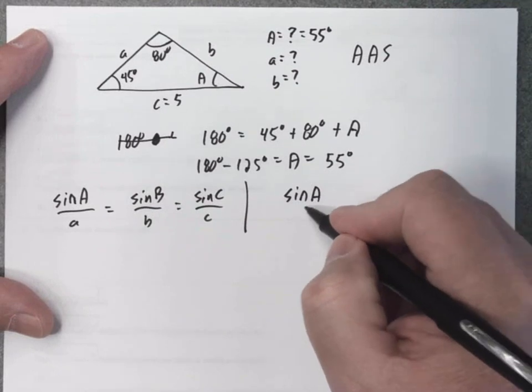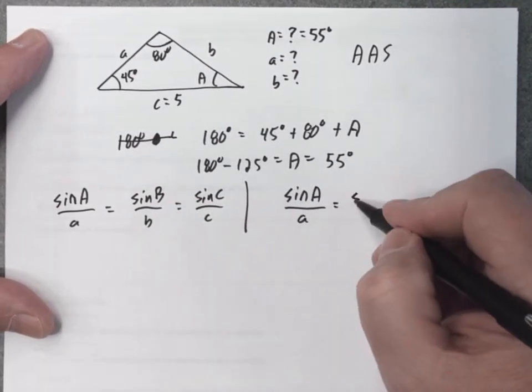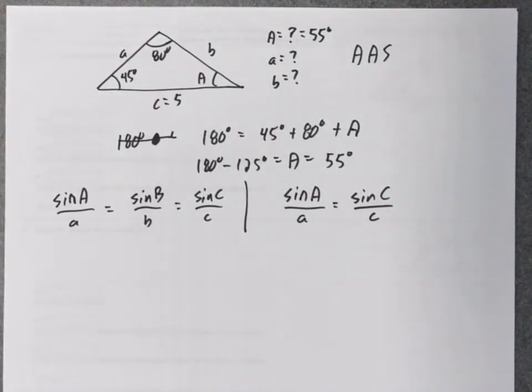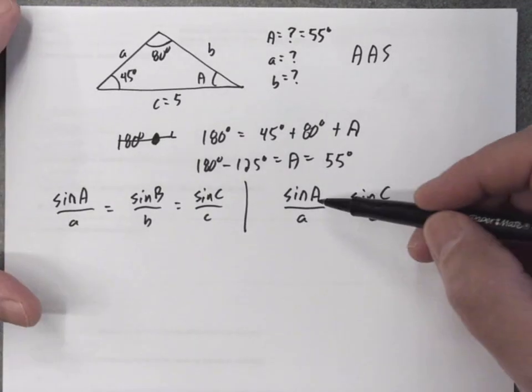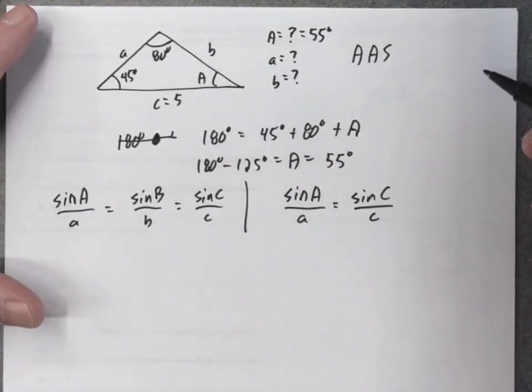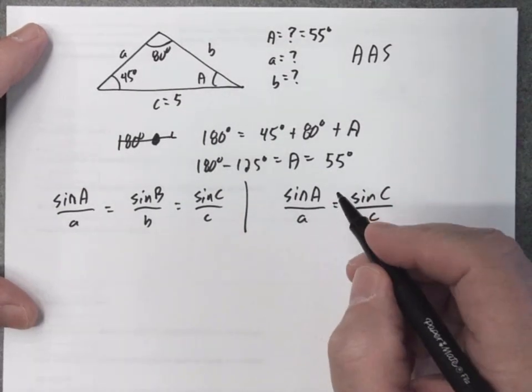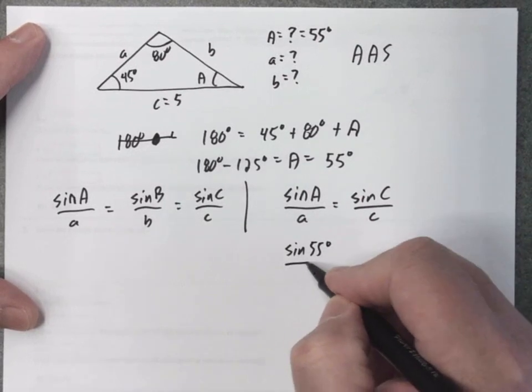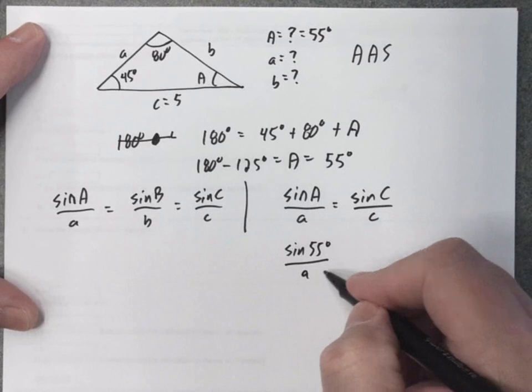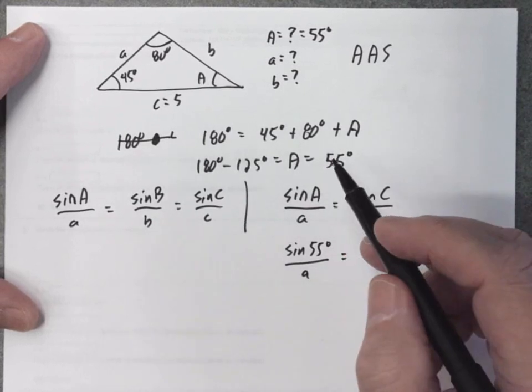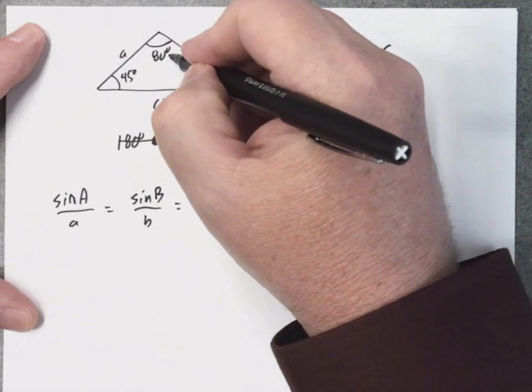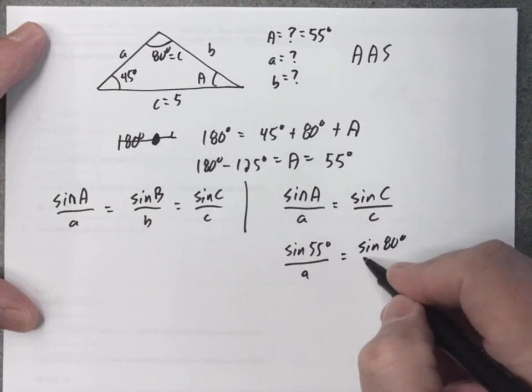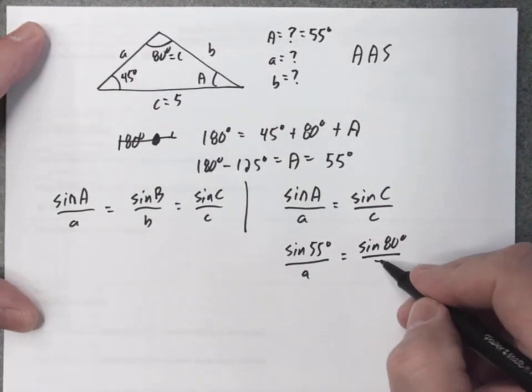So, I know sine of A over small a equals sine of C over small c. I'm just going to go ahead and plug in everything I know now, and then I will solve this. I know angle A is 55 degrees. I do not know the length of side A. I know angle C is 80 degrees. And the length of side C is 5.